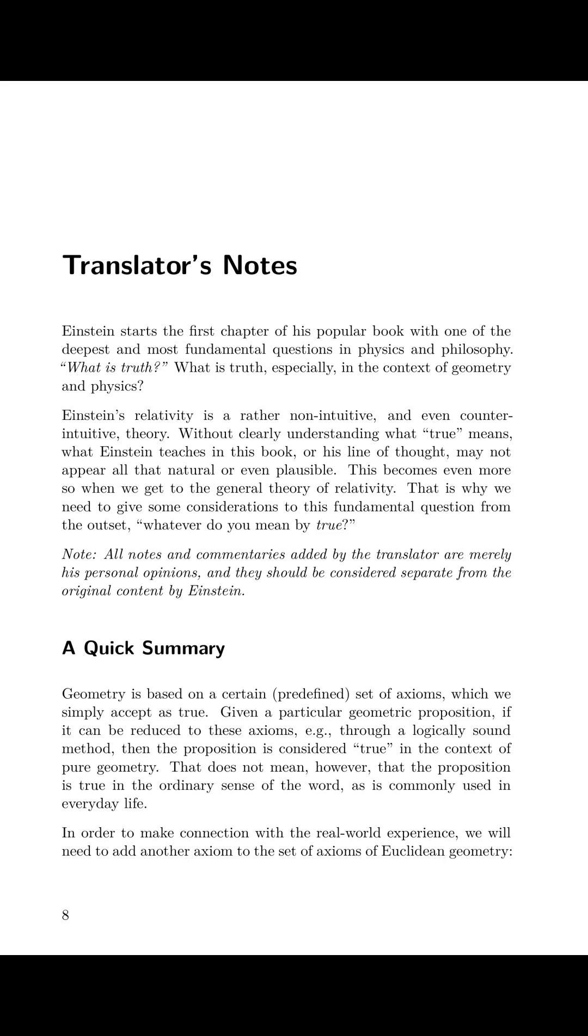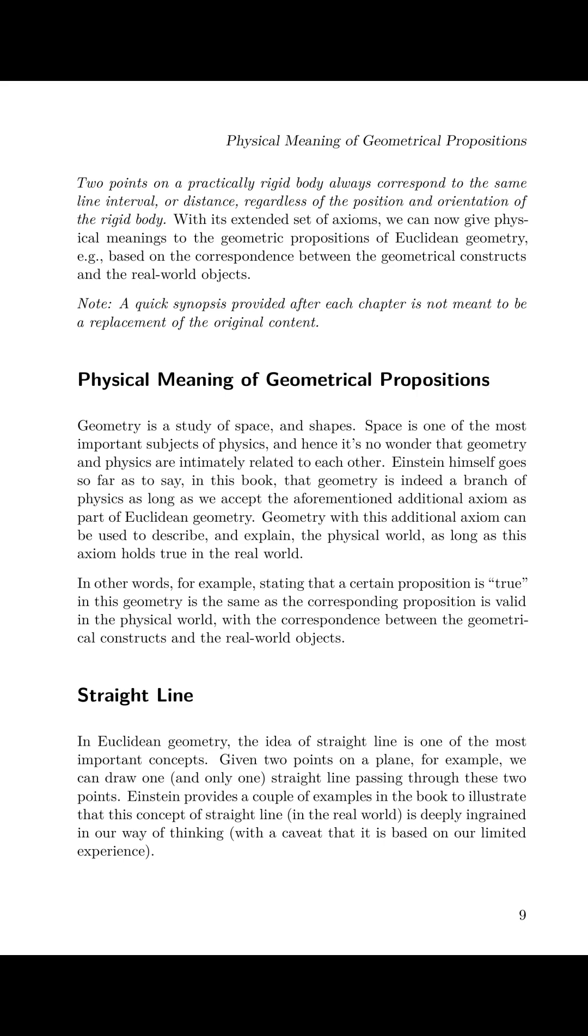A Quick Summary. Geometry is based on a certain predefined set of axioms which we simply accept as true. Given a particular geometric proposition, if it can be reduced to these axioms, e.g. through a logically sound method, then the proposition is considered true in the context of pure geometry. That does not mean, however, that the proposition is true in the ordinary sense of the word, as is commonly used in everyday life. In order to make connection with the real-world experience, we will need to add another axiom to the set of axioms of Euclidean geometry: two points on a practically rigid body always correspond to the same line interval or distance regardless of the position and orientation of the rigid body. With its extended set of axioms, we can now give physical meanings to the geometric propositions of Euclidean geometry, e.g., based on the correspondence between the geometrical constructs and the real-world objects.